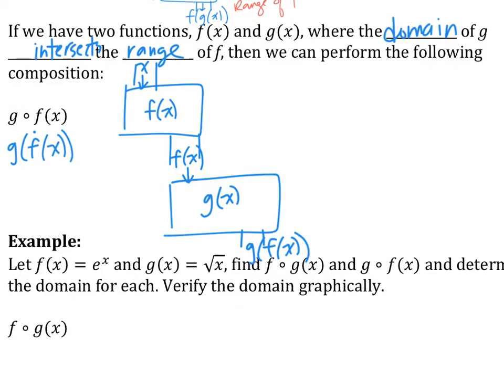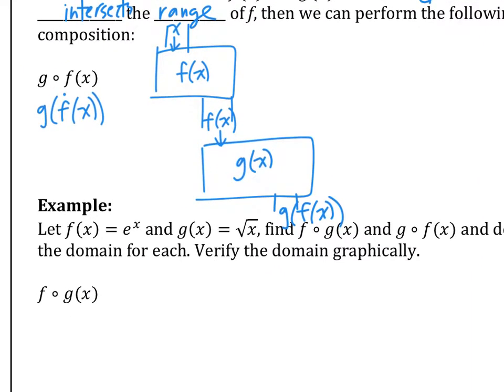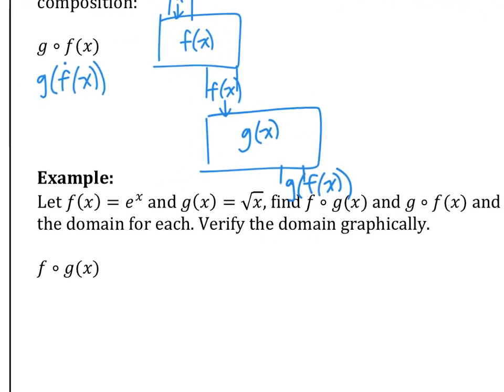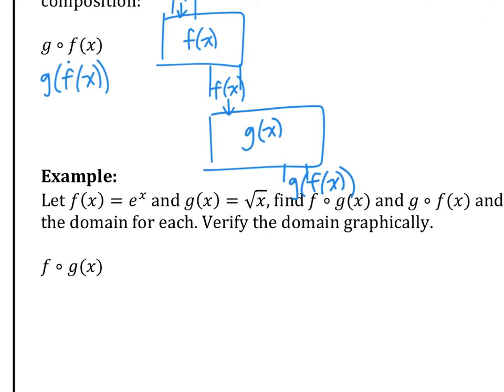Let's try it. If f of x is e to the x, g of x is square root of x, find f of g of x and g of f of x, and the domain of each. Verify graphically. Let's do this first — change it so you don't get too scared about the notation.